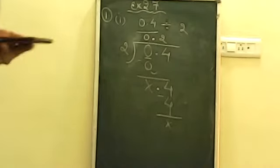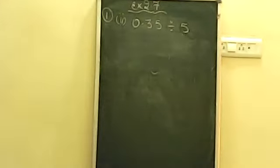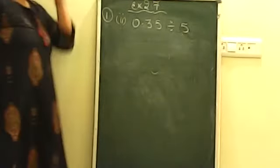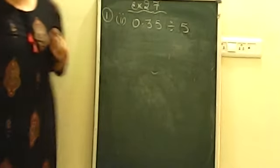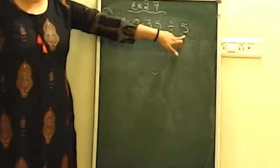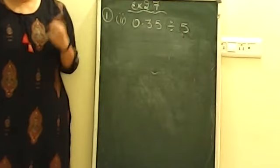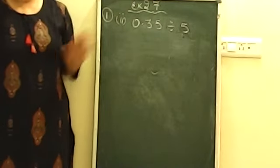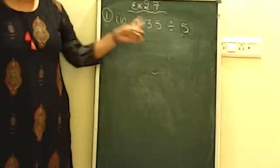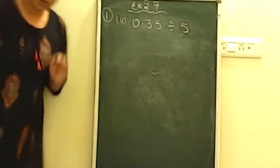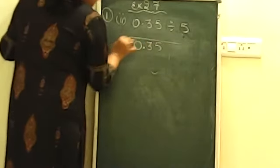0.2 is the answer for this particular question. Now I give you this question: 0.35 divided by 5. We are doing all questions where the divisor is a normal number — a normal number whose table you can easily read, so you can easily divide. Now, 0.35 I will write as the dividend, and divide it by 5. 5 is the divisor here.